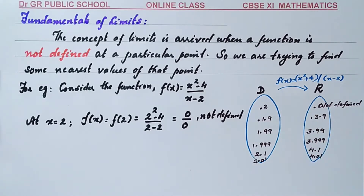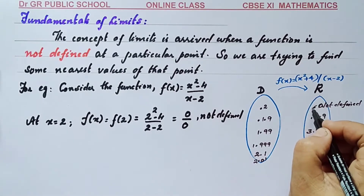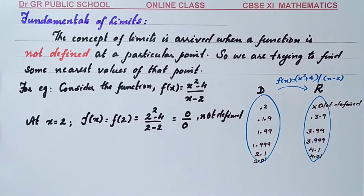When the function takes the value 2 from the domain, the value is not defined — we can't see a value in the range. A not-defined value never comes to the range of the function. In such a case, we need to find some values which are nearest to the value 2.